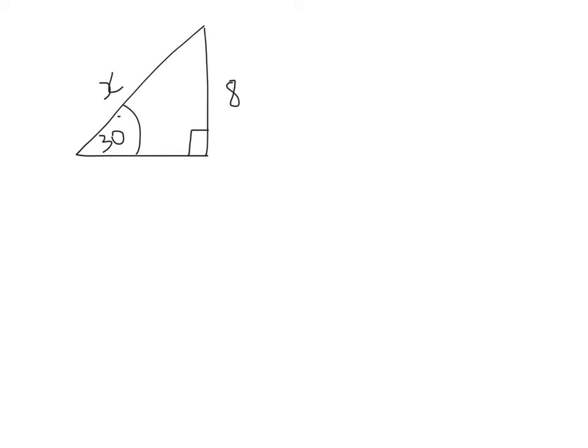So, step one, I'm going to label my triangle. So, I'm starting off with the hypotenuse, which is opposite the right angle. The side opposite my 30 degrees, I'm going to label O. And the left over side, I'm going to label A. Next, I'm going to circle what I know and what I'm trying to find out. So, I know that I've got an angle of 30 degrees. I know that the side O is worth 8. And I'm trying to work out what X is.